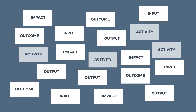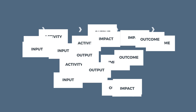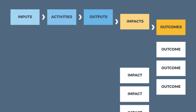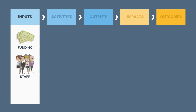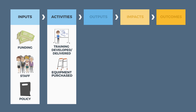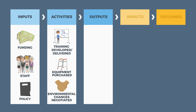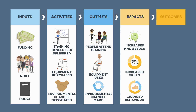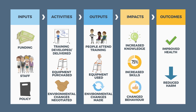A program logic model is a visual tool that tells the story of how a program should work. It shows what resources will be used, and what activities will be done with those resources. It outlines the products, goods and services that will result from the activities, and describes the short and intermediate term impacts of those activities. Finally, it shows the long term outcomes the program is expected to achieve.